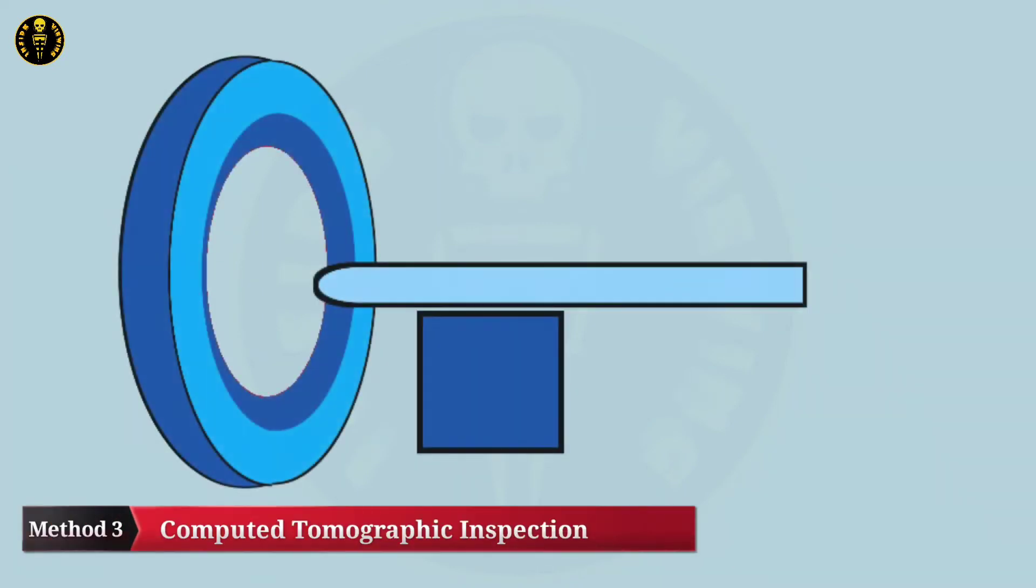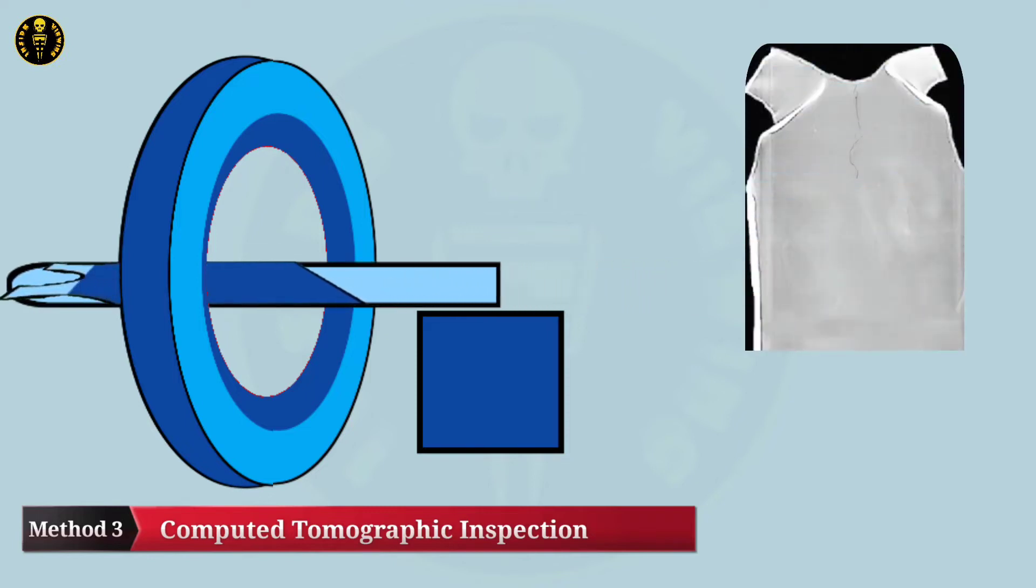For this method, place the apron on the patient's couch, then take a topogram of the apron. From the topogram you can easily identify or detect any imperfections in the lead lining.